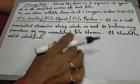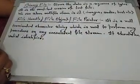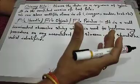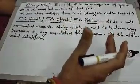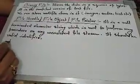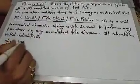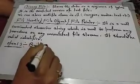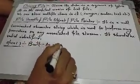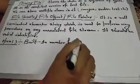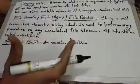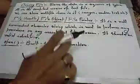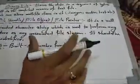किसी भी file को open करने के लिए या कोई भी operation perform करना है, तो सबसे पहले हमें file को open करना होगा। File को open करने के लिए हम एक open member function यूज करते हैं जो कि एक built-in member function है — उस associated library का member function है जो file के लिए है।